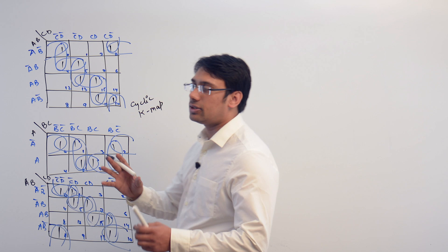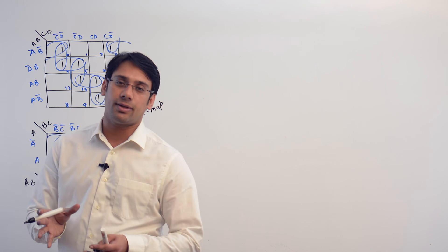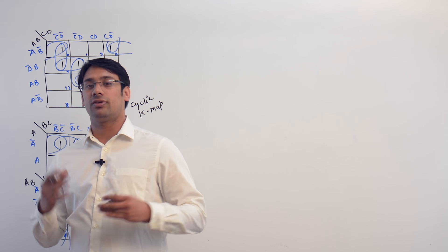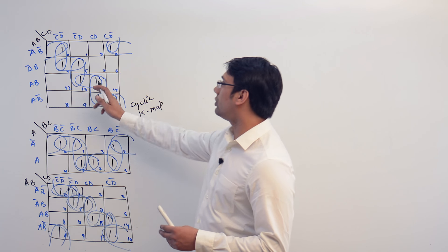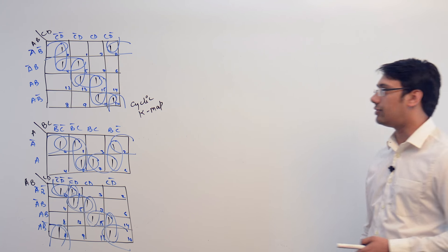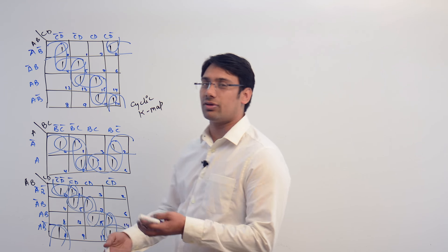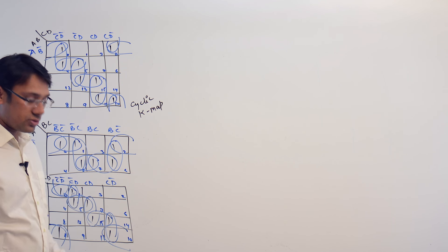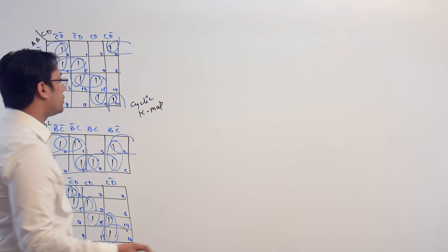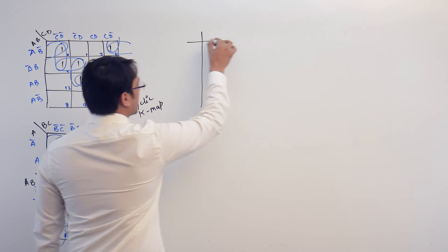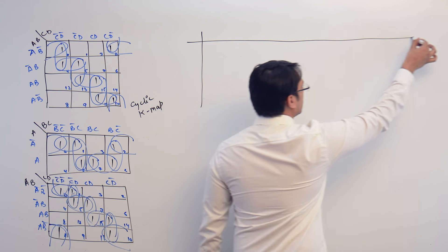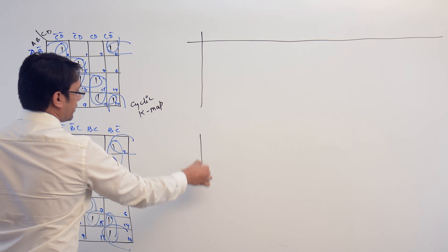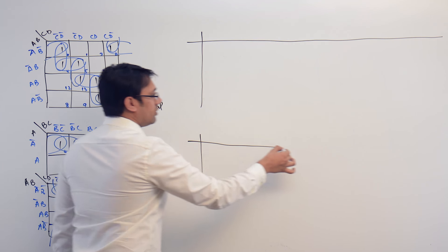Not having an essential prime implicant does not mean that you cannot find a solution — it means that you can have more than one solution. For example, if you take the first one, we can find more than one solution. So let us try to find multiple solutions using a prime implicant chart. We will be making two prime implicant charts for this one.